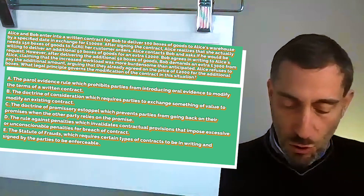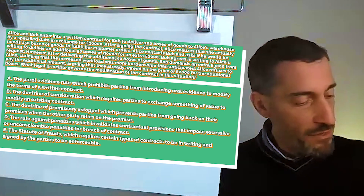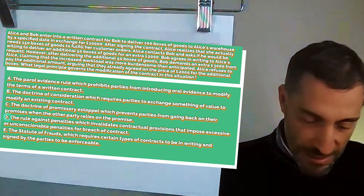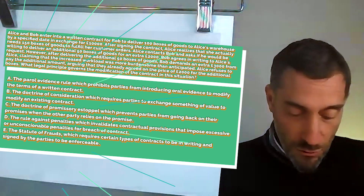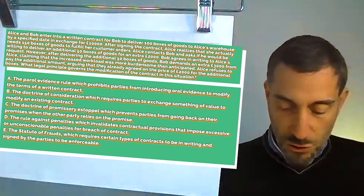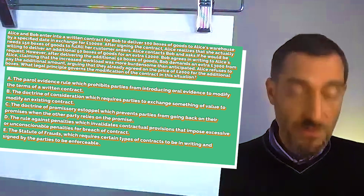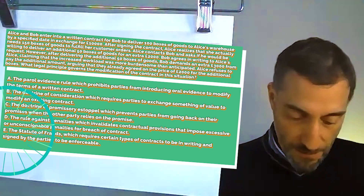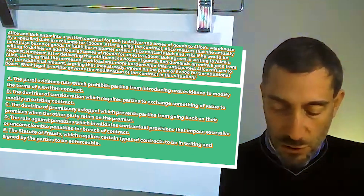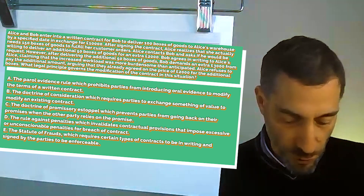Option C is the doctrine of promissory estoppel, which prevents parties from going back on their promises when the other party relies on that promise. Option D is the rule against penalties, which invalidates contractual provisions that impose excessive or unconscionable penalties for breach of contract. Option E is the statute of frauds, which requires certain types of contracts to be in writing and signed by the parties in order to be enforceable.